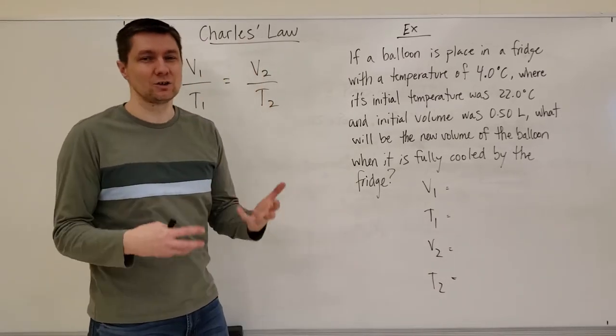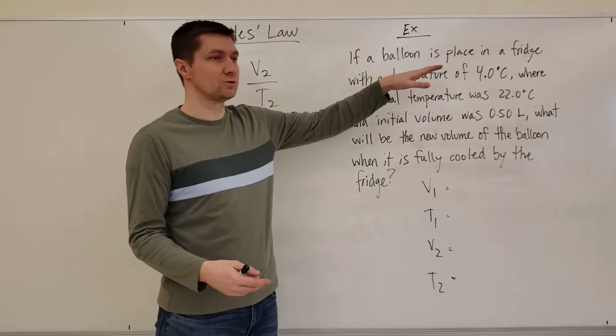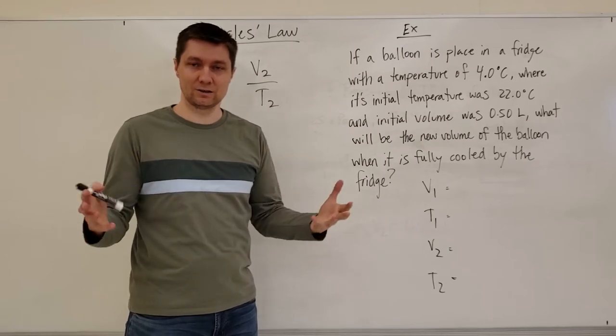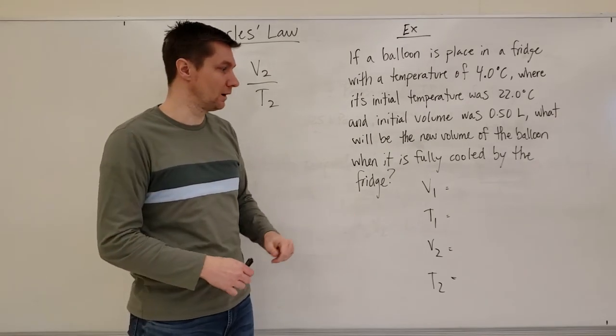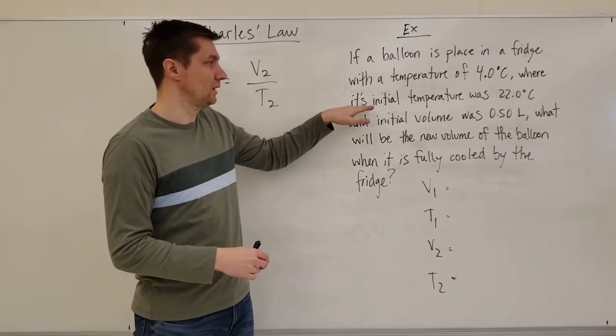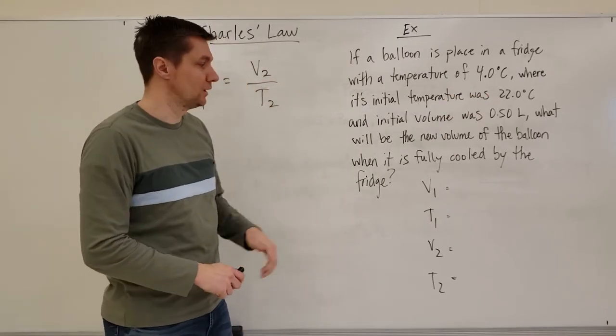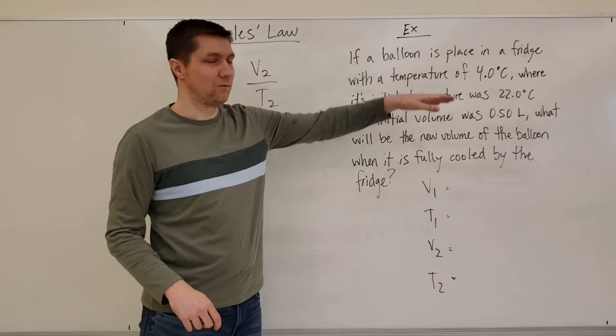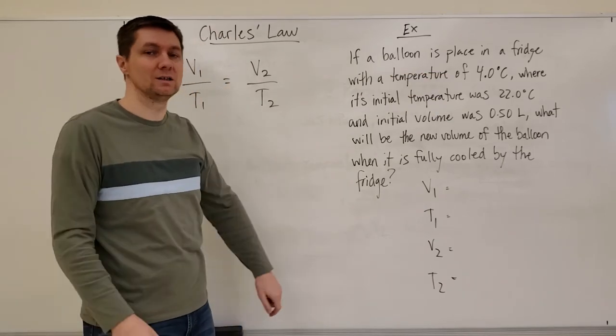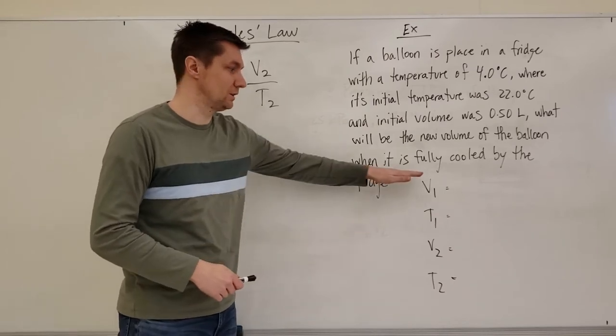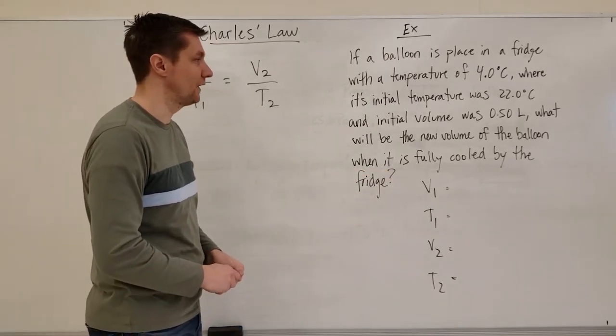So don't get into the groove of thinking that whatever numbers are listed first, that's going to be my initial numbers. You have to read it and understand the paragraph and identify, okay it says the initial temperature was 22 degrees Celsius so that's my T1. Four degrees Celsius is going to be my T2. The order in which those numbers show up doesn't always mean initial to final, you have to read it and be careful with that.